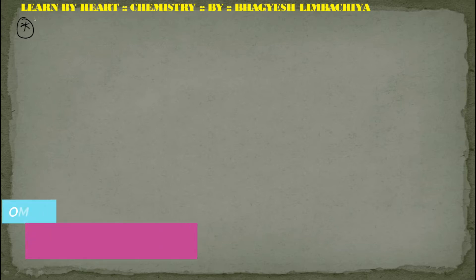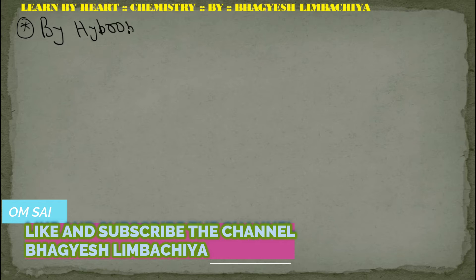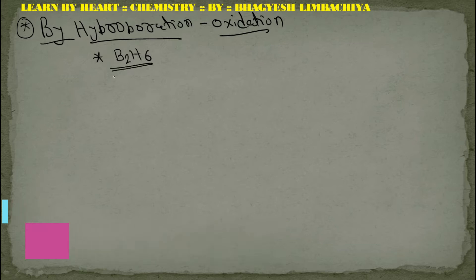Hello students. Now we are taking the second method of the preparation of alcohol from alkyne, and that is by hydroboration oxidation. Remember two reactions: B2H6 (diborane) and H2O2 in basic media.